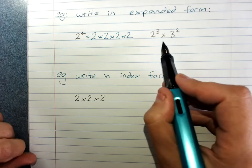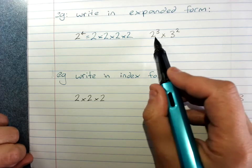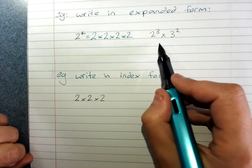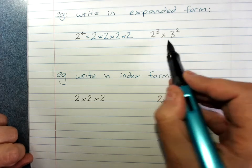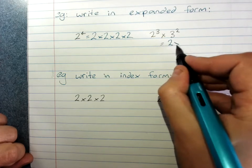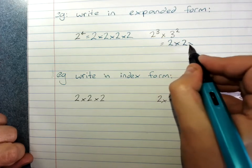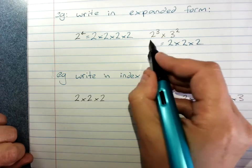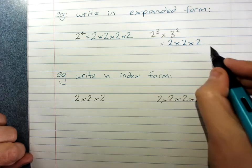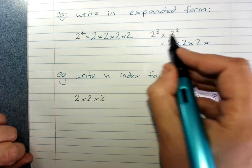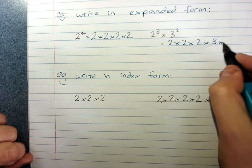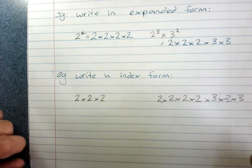We can have different numbers multiplied together with different powers. This one would be 2 times 2 times 2 — that's 2 to the power of 3 — times 3 squared, which is 3 times 3.